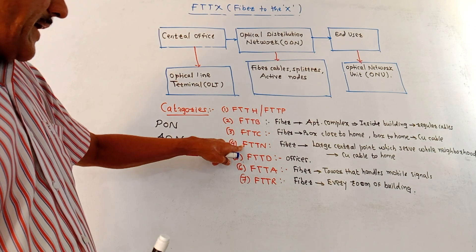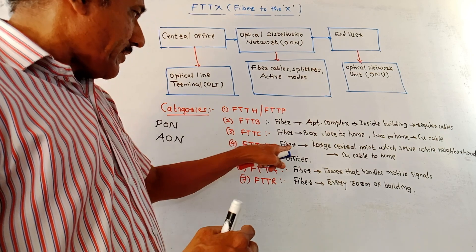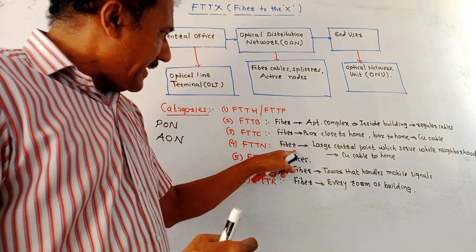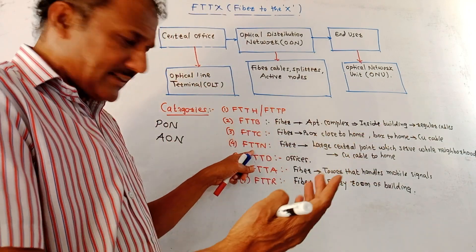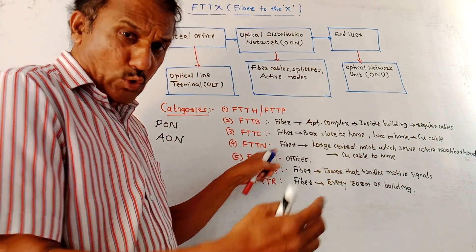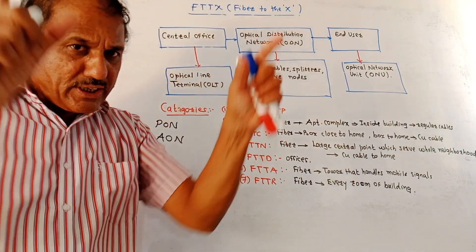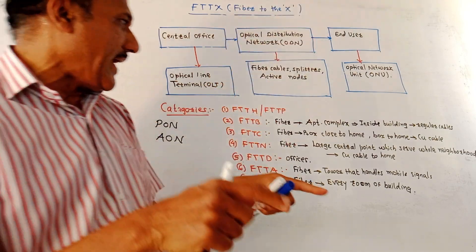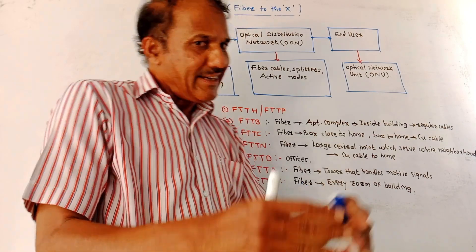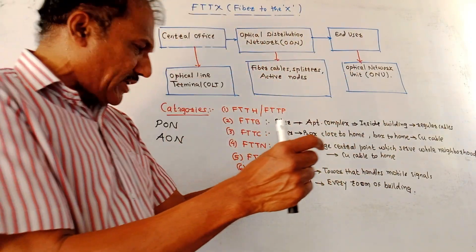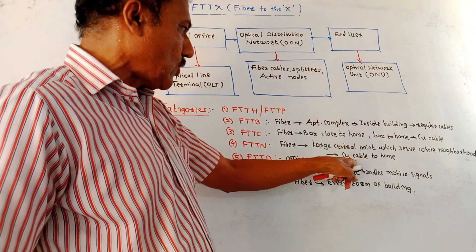Next is FTTN — fiber to the node, also understood as fiber to the neighborhood. The fiber is connected to a large central point that covers the entire neighborhood area. Within that neighborhood there are different buildings and homes. The connection from that node to different homes is done using copper cabling.